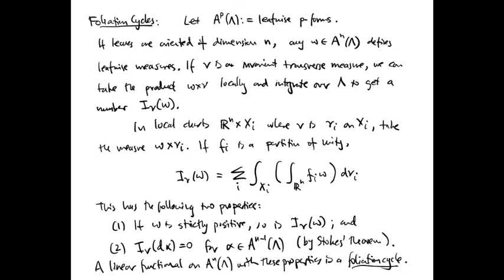More precisely, our invariant transverse measure nu can be written as a family of measures nu_i on the local leaf spaces X_i in the local product charts R^n times X_i. On each local chart, we can take the measure omega times nu_i. If f_i is a smooth partition of unity subordinate to the cover by these local charts, then I_nu of omega is the sum over i of the integral over X_i of the integral over R^n of f_i omega d nu_i.